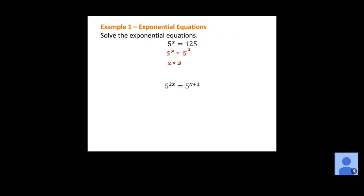If you can get the bases the same, then we can set the exponents equal, and that gives us the value of our variable. Now the second one: we've got 5 to the 2x equals 5 to the x plus 1. The bases are already the same — they're already 5 — so we set the exponents equal. Take the 2x, set it equal to x plus 1, and solve for x. Subtract x from both sides; that gives us x equals positive 1.